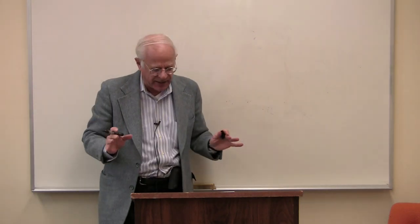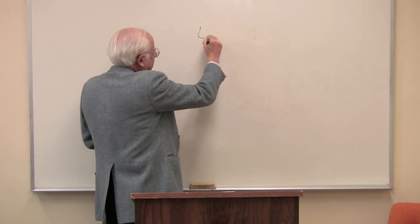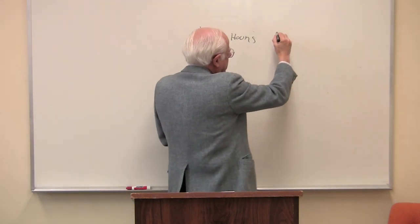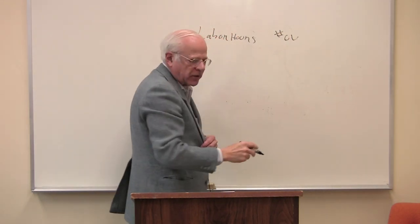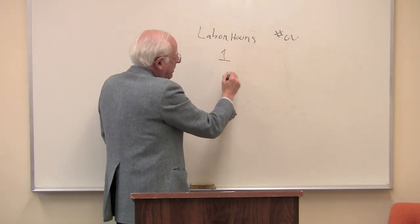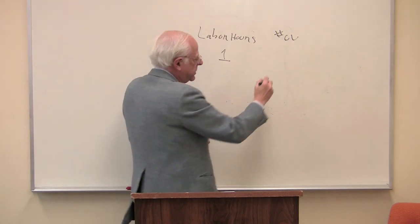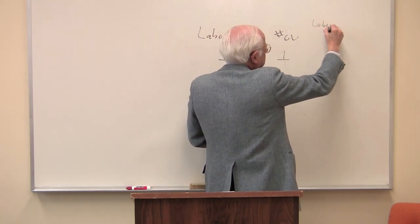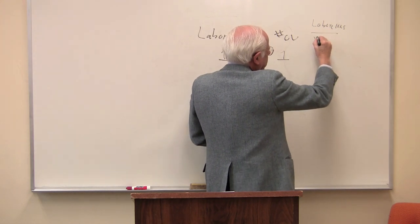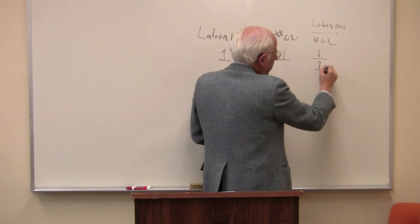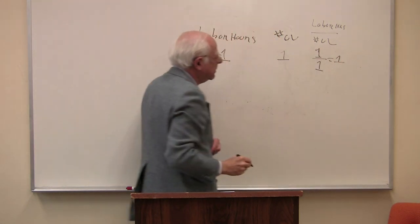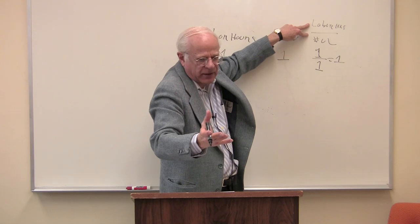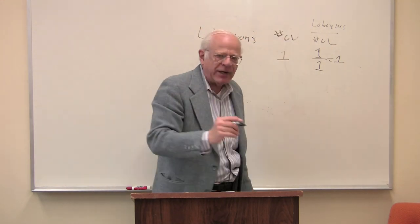Let me take the easiest example I can think of. Here are our labor hours — abstract labor hours — and here is the number of things, the pieces of wealth, what Marx calls use values, that are being produced. Suppose in one hour, a person produces one chair. So let's measure the labor hours per thing: one hour in the numerator for one thing — that equals one.